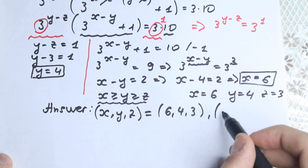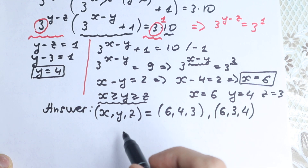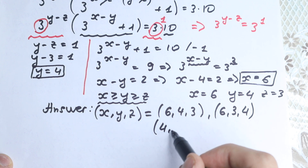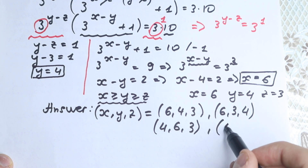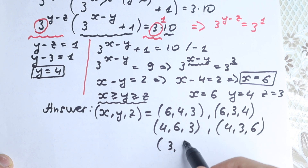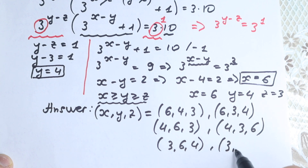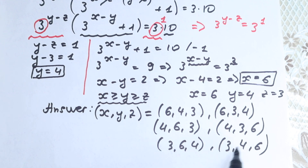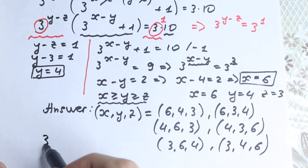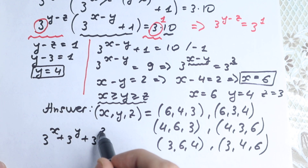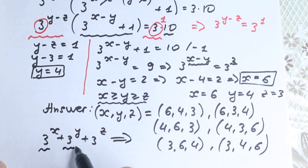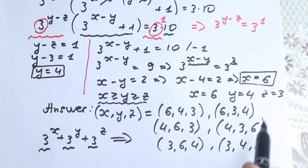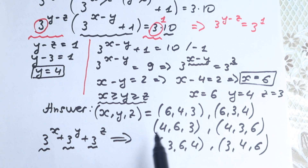This is our complete solution, because we had the supposition that x is greater than or equal to y and y is greater than or equal to z, but we need to combine all possible solutions. Since all terms have the same base 3 and we're adding, any permutation works — it doesn't matter whether 3 to the 4th appears here or there, the sum is the same.